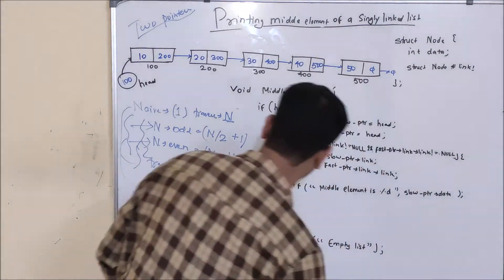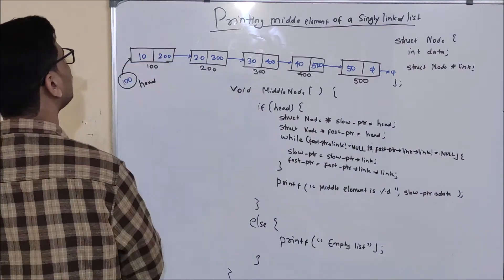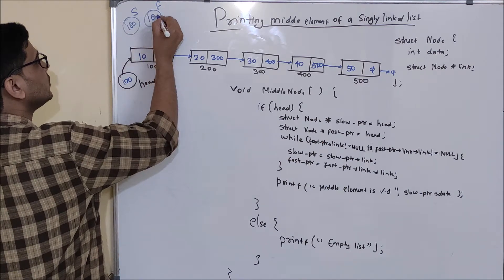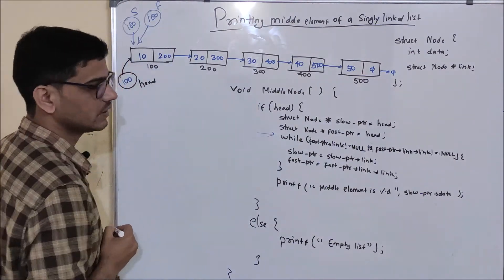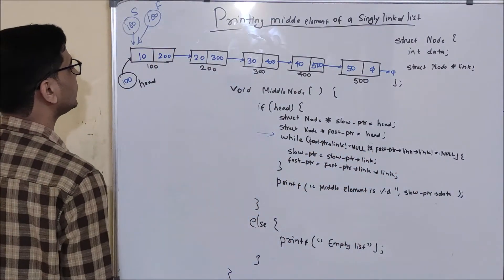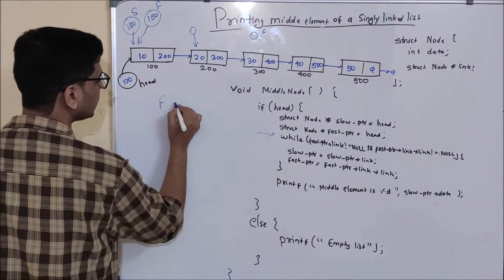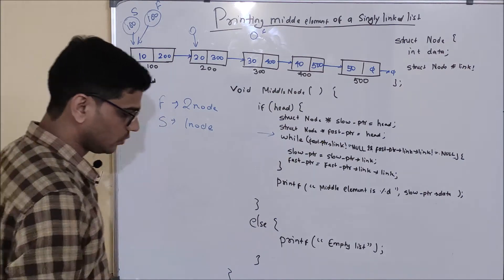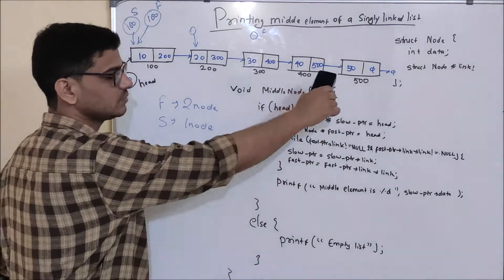Again we are going to use two pointers. Let's understand the logic. What we will do is create two pointers: one will be a slow pointer and another will be a fast pointer. Initially, both pointers will be pointing to the first node. We will check a particular condition in every iteration, and if it is true, we move the slow pointer by one node and the fast pointer by two nodes.